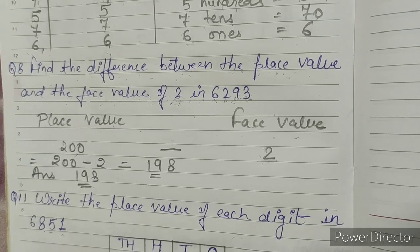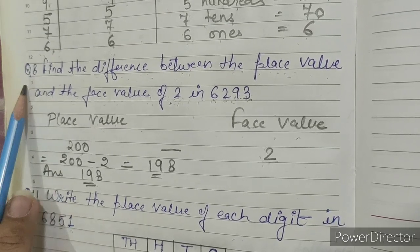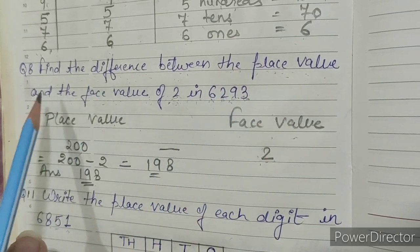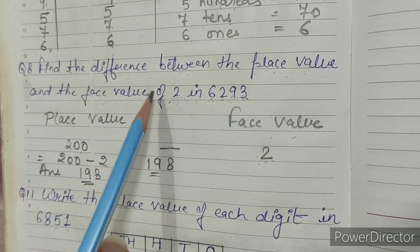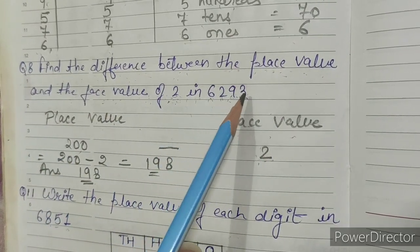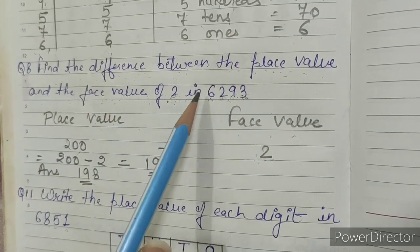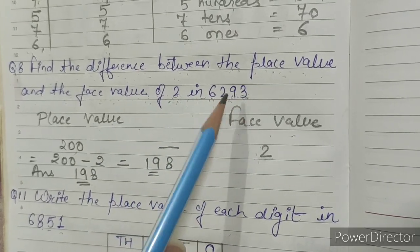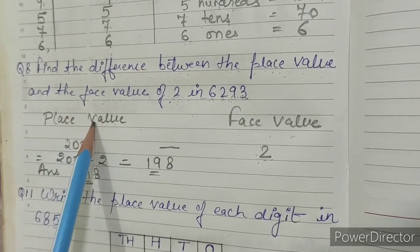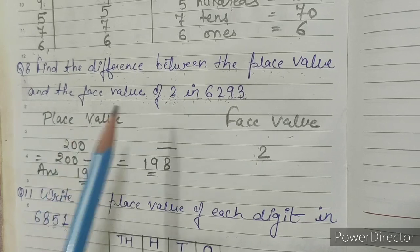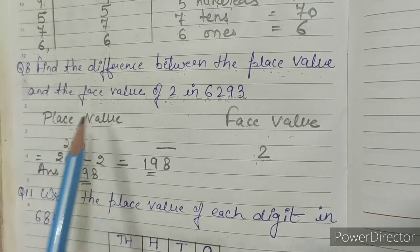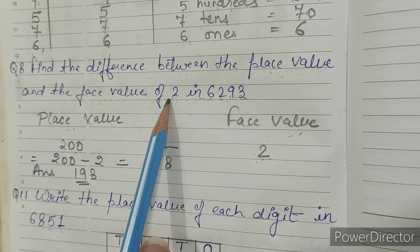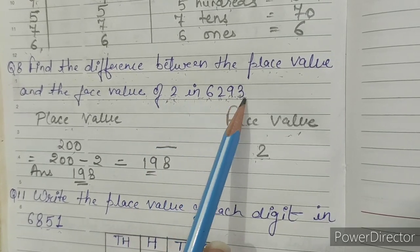Now I will explain in Hindi. Question No. 8: Find the difference between the place value and the face value of 2 in 6293.